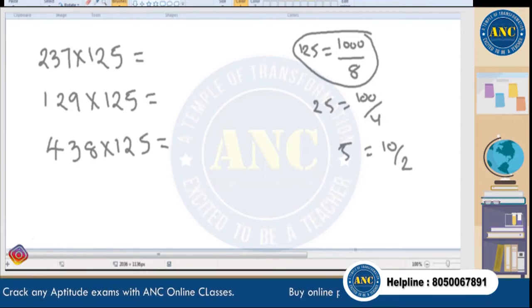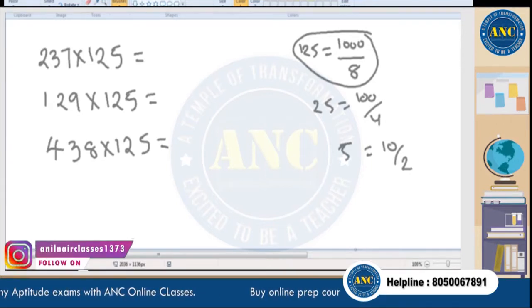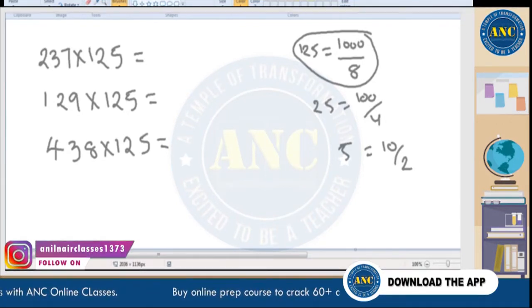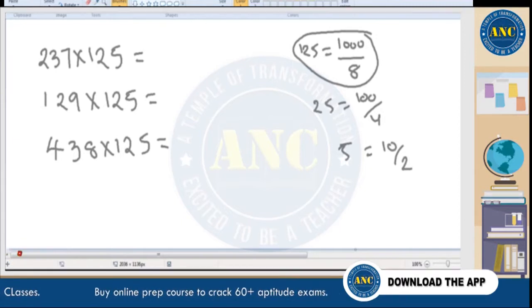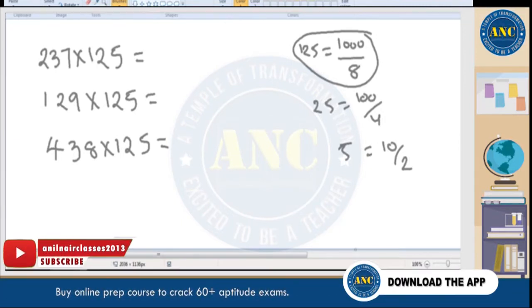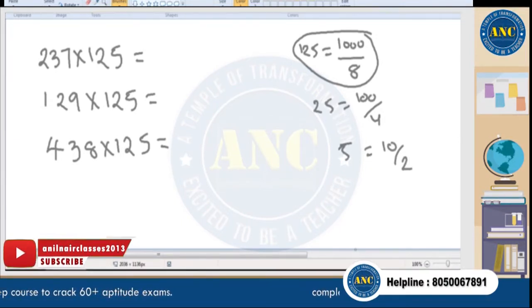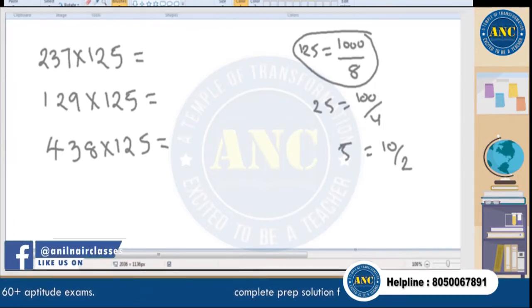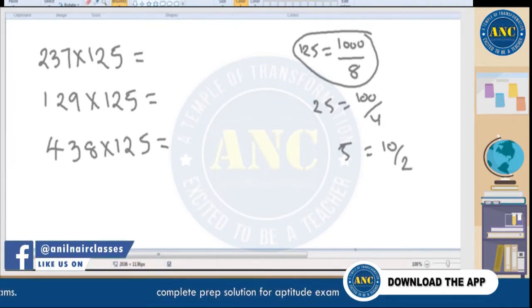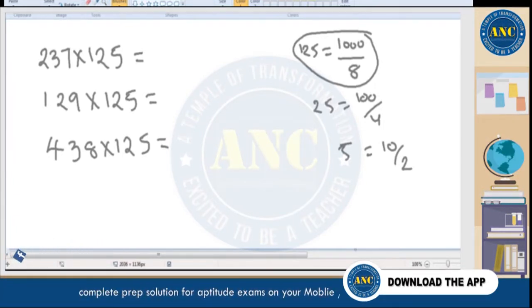For 237 × 125, the first answer is 29,625. Some members posted 29,250 or 29,675 — the correct answer is 29,625.